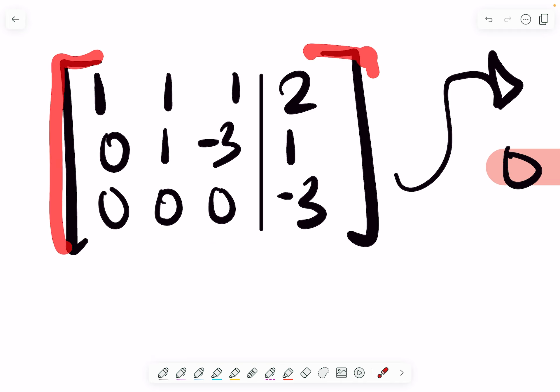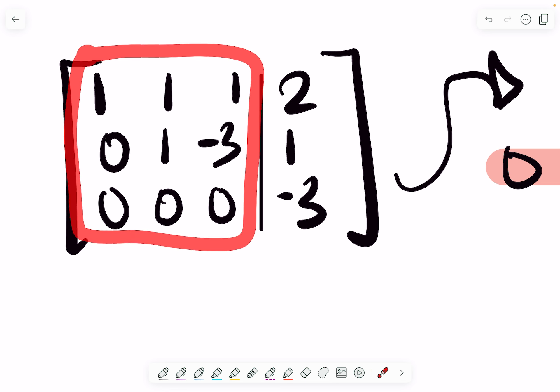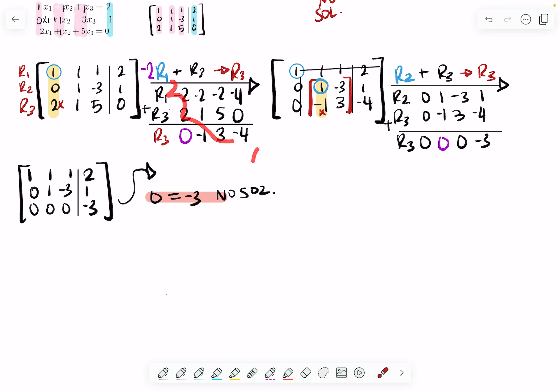In other words, when you're dealing with an augmented column, yes you can perform row echelon form, but just know that when you're checking conditions, you're only looking at this. You can just ignore this until you're actually doing operations and you actually have to change the values.